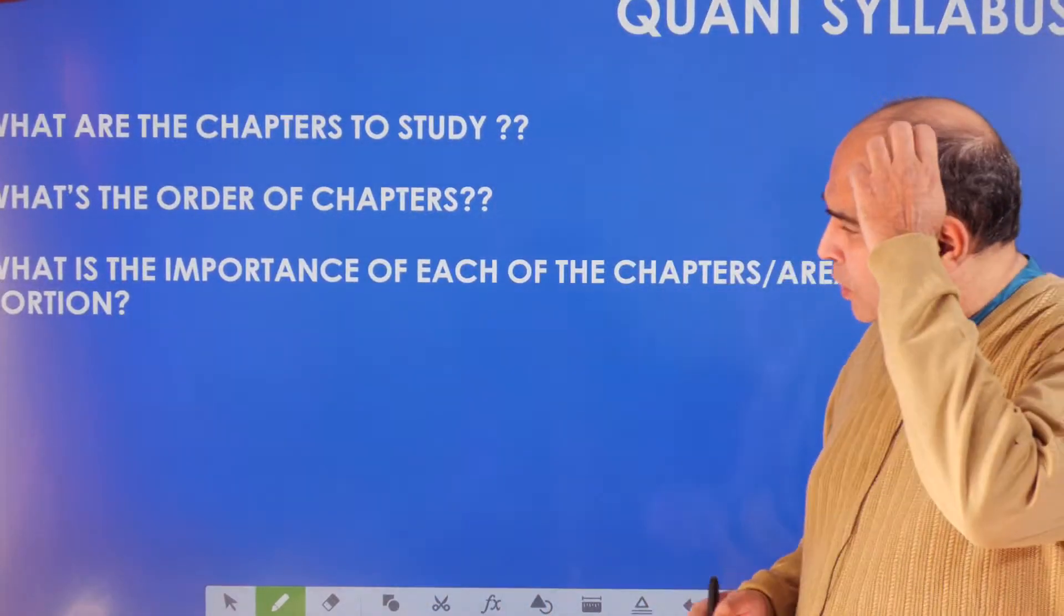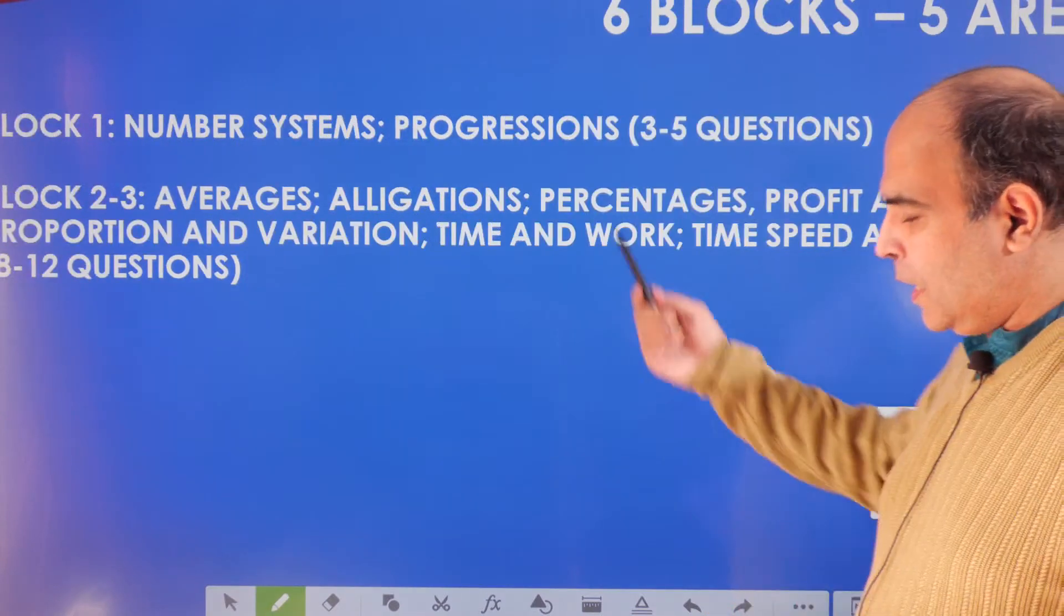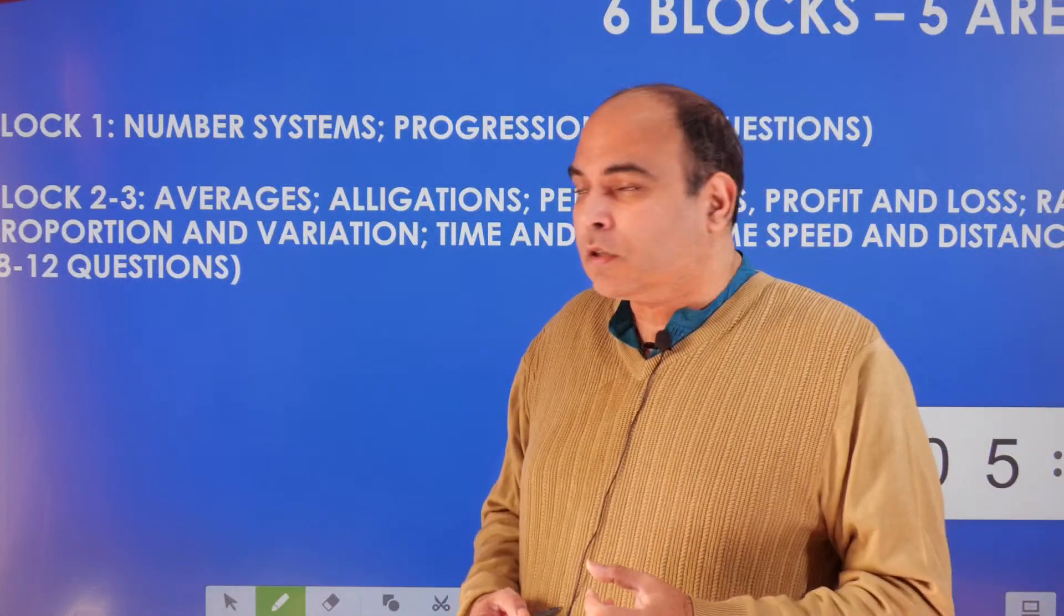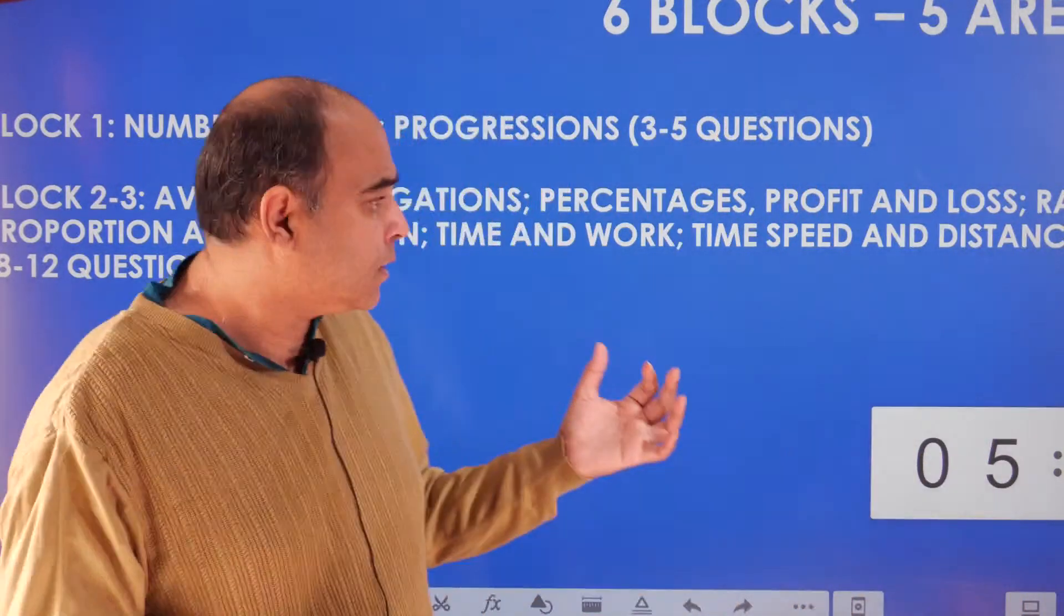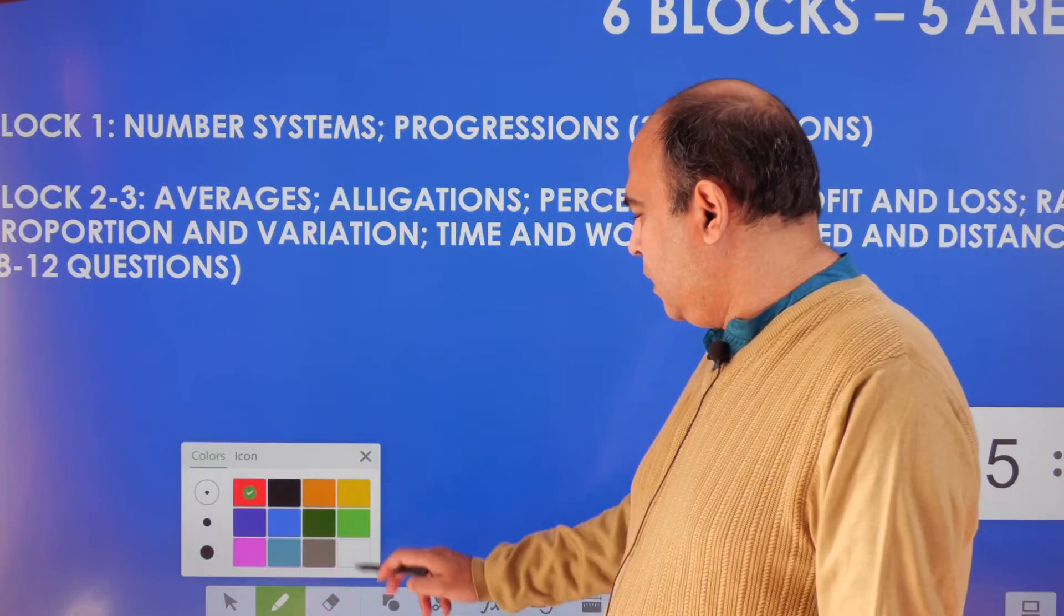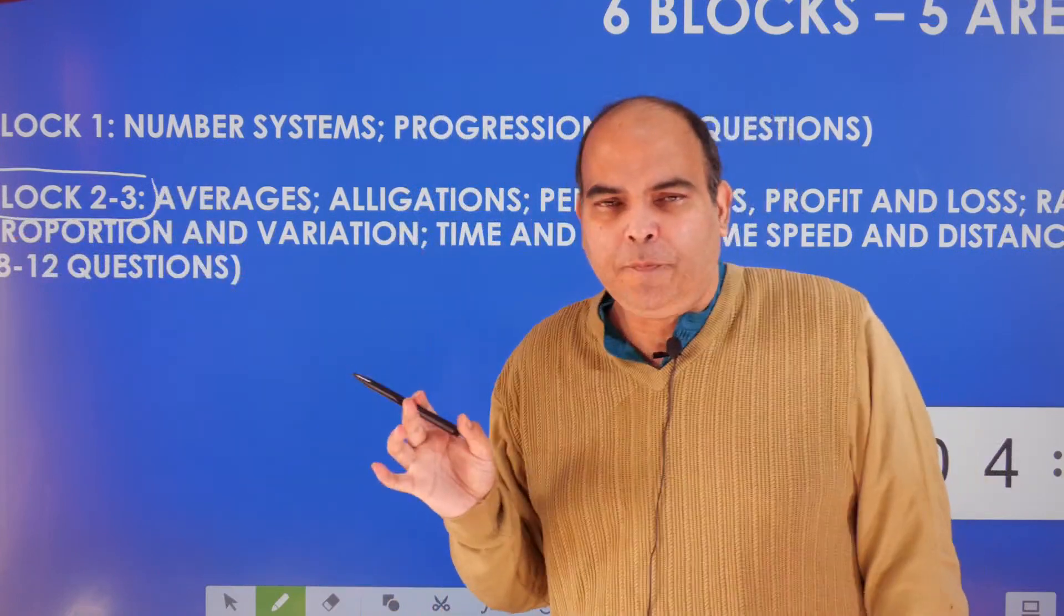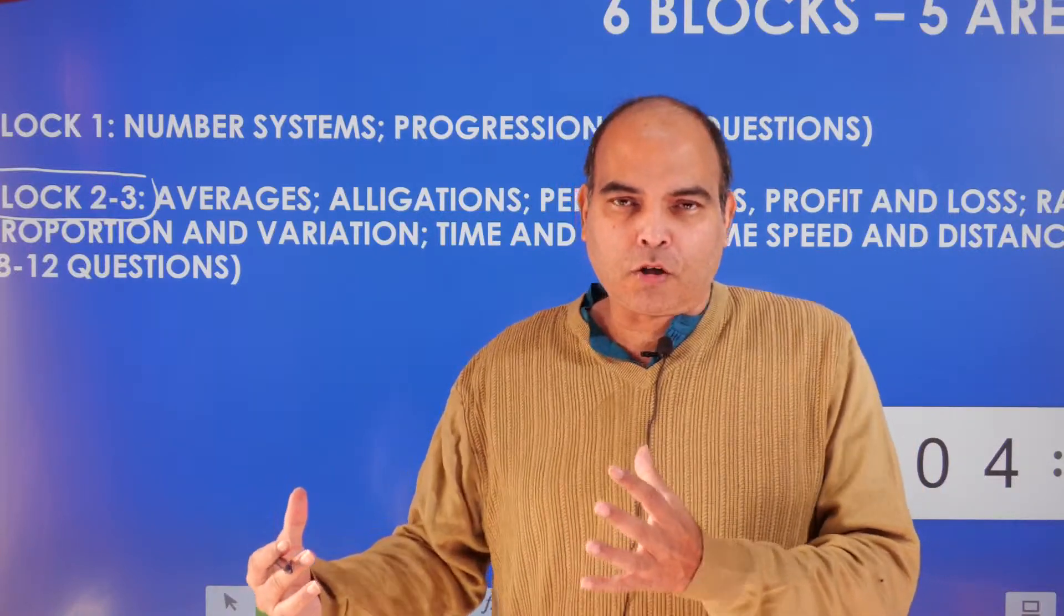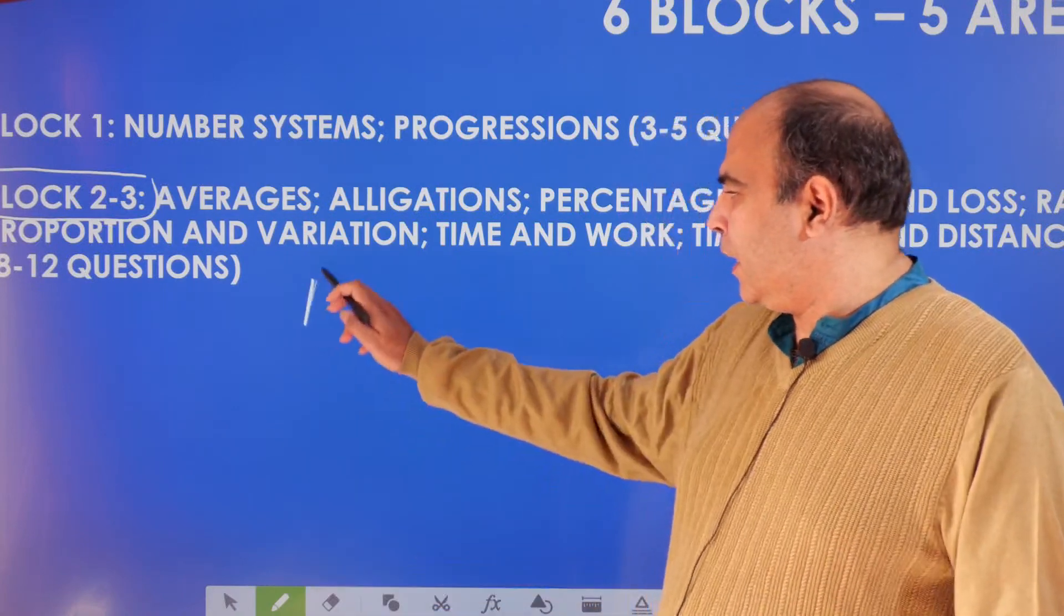The syllabus: what are the chapters to study, what's the order of the chapters, what is the importance of each chapter? I'll just go through the organization of my books—the QA for CAT book. I've divided the portion into six blocks: Block 1, 2, 3, 4, 5, and 6. The order will remain broadly the same. While preparing, I suggest you should take Block 2-3 as your first block of preparation. You should not think of them as two different blocks but one area to prepare.